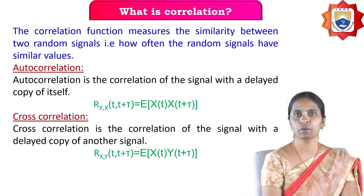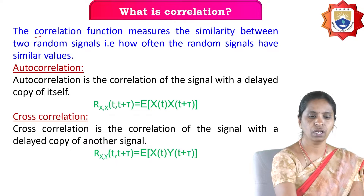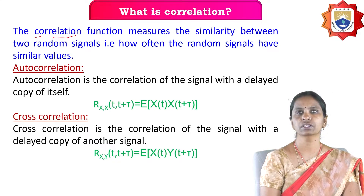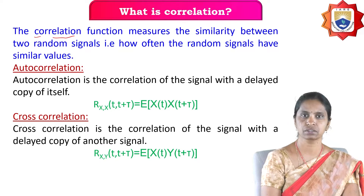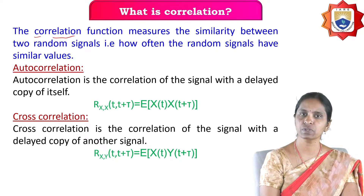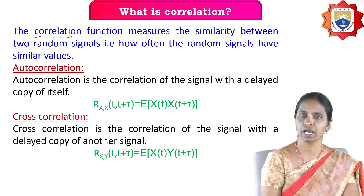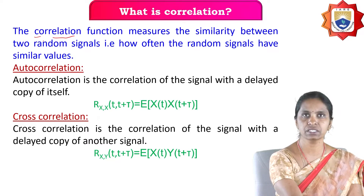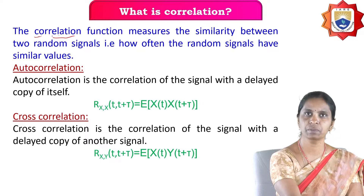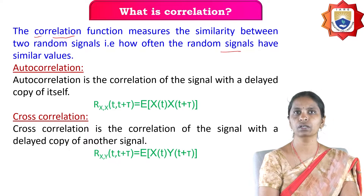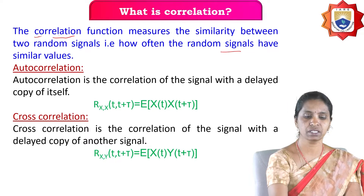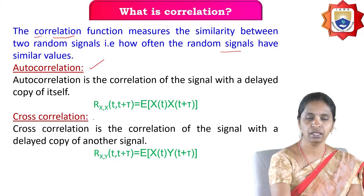Now let us revise the topic of correlation. Correlation measures the similarity between two components — whether two variables, two signals, or two random processes. Autocorrelation and cross-correlation both measure similarity between two quantities. Autocorrelation measures the similarity of a signal with a delayed copy of itself, i.e., between x(t) and x(t ± τ). So autocorrelation measures similarity between the given signal and its delayed version.